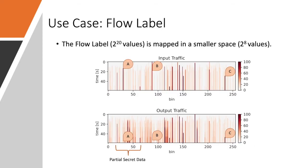Speaking about the flow label case, the flow label is composed of 2 to the power of 20 values. And they are mapped into a smaller space equals to 2 to the power of 8. Since each flow label identifies an IPv6 conversation, through this representation we are able to spot and define the flows.